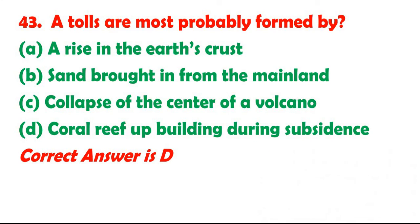Question 43: Atolls are most probably formed by: A. A rise in the Earth's crust. B. Sand brought in from the mainland. C. Collapse of the center of a volcano. D. Coral reef upbuilding during subsidence. Correct answer is D.